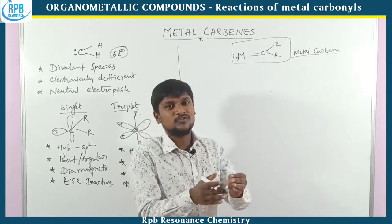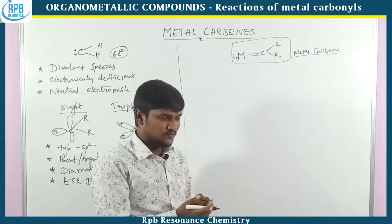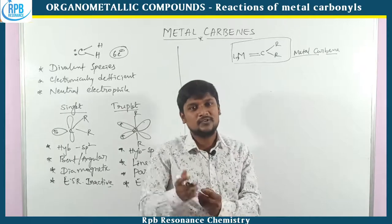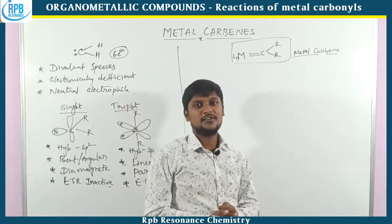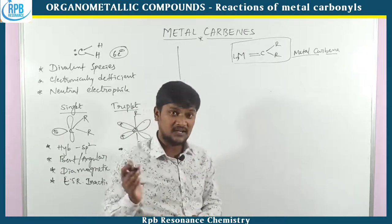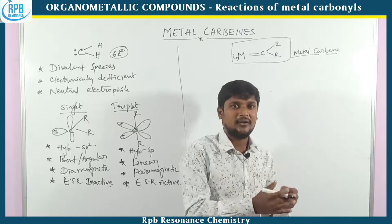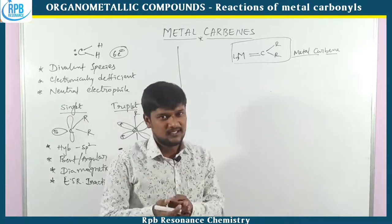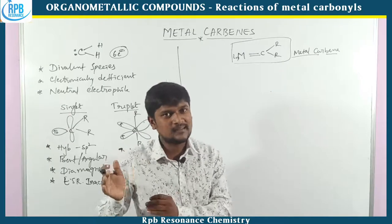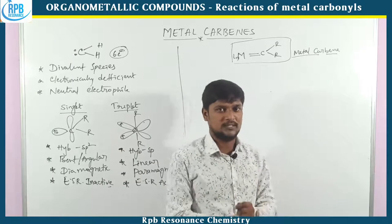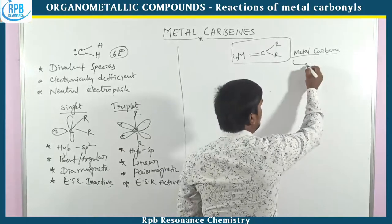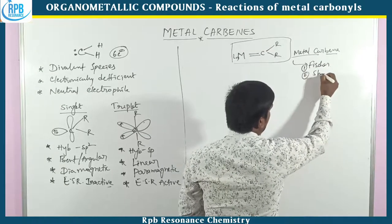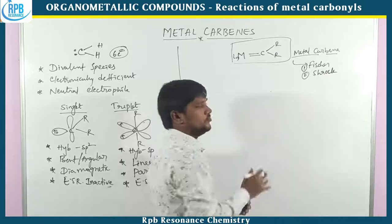Metal carbenes were first synthesized by Fischer — those kinds of metal carbenes are called Fischer carbenes. After ten years, it was modified as a nucleophilic metal carbene, that is Schrock carbene. In this class, we are mainly focused on the synthesis of Fischer carbenes and Schrock carbenes. Two types of carbenes are there.